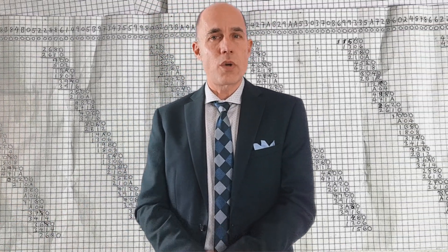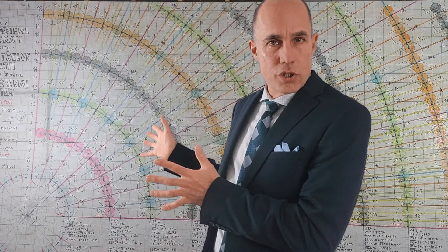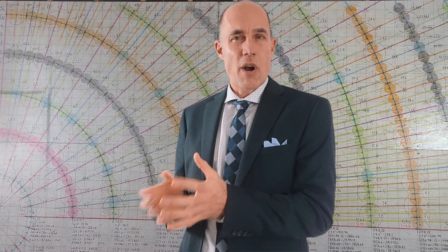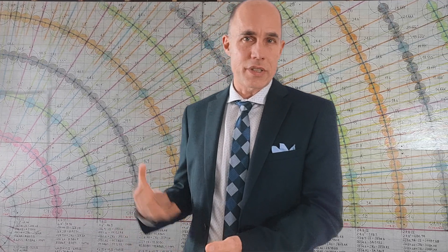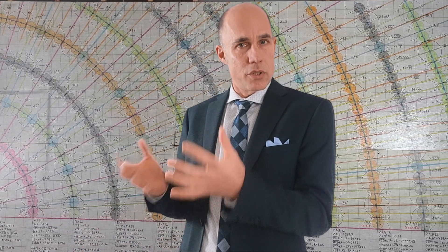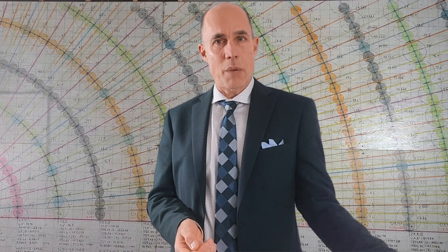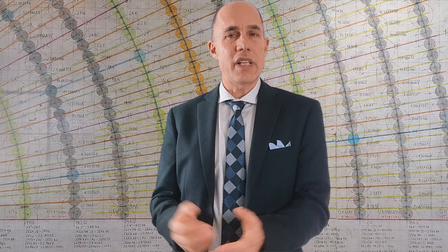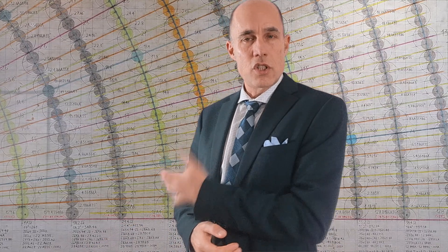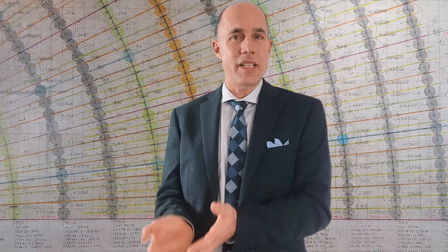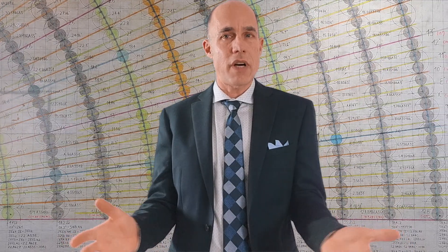We're continuing our journey towards a better understanding of the base 12 version of pi. In previous videos I introduced this diagram for 360 degrees — the diagram that generates all those degrees. You can see it's a series of rings, and each ring builds on the degree sections that came before. On the 30th ring we have a circle divided into 360 equal parts. This is the geometry for 360 degrees and it only exists in base 12.